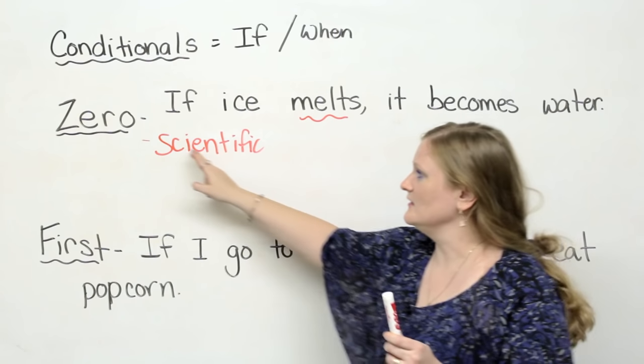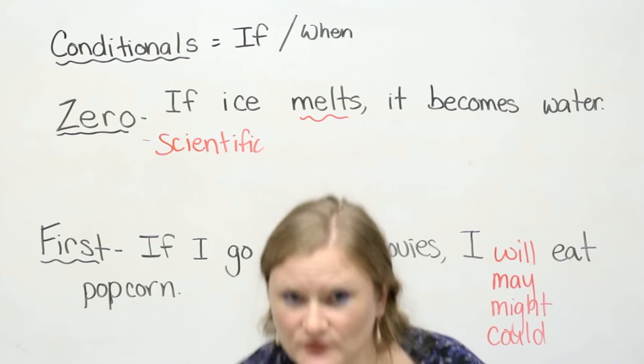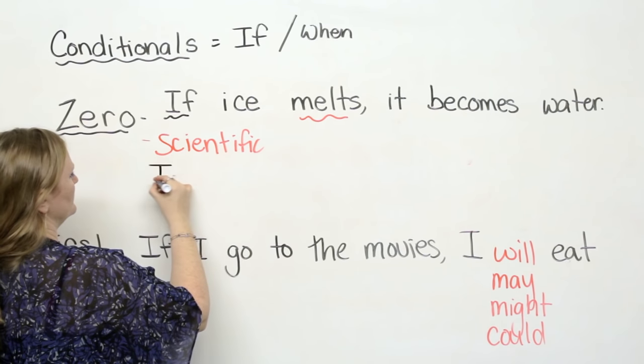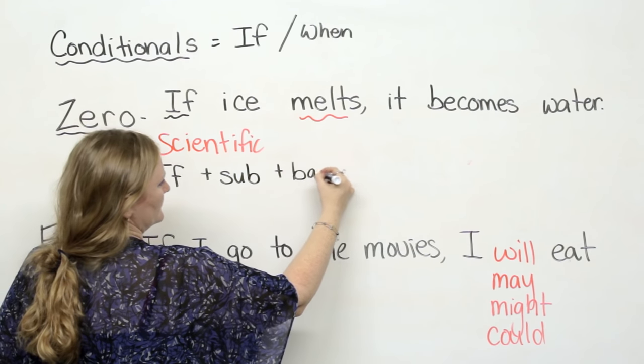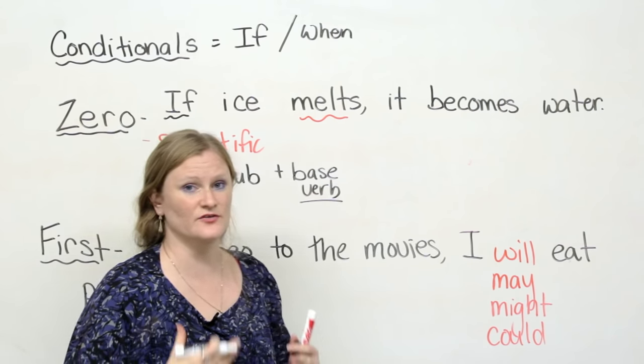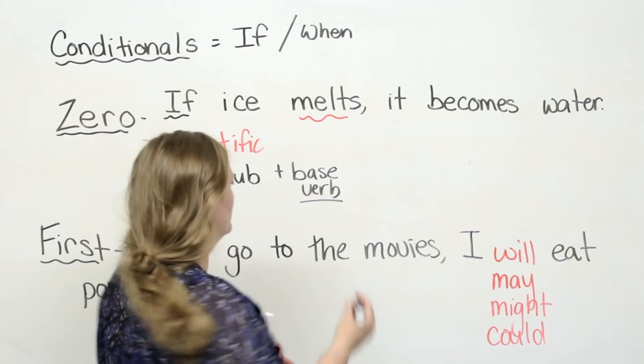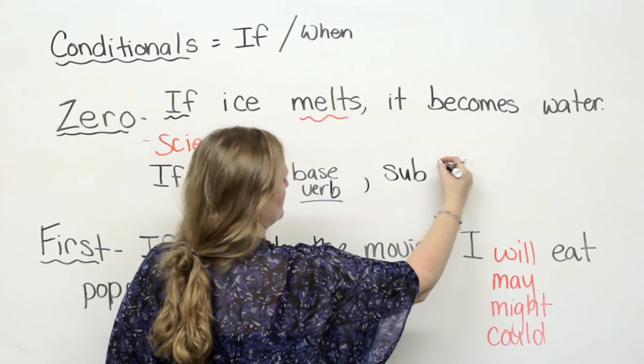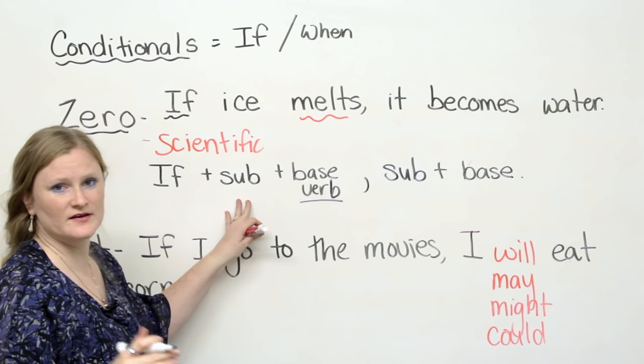So if something is 100% scientific you're going to use a zero conditional. How do you make conditionals? This is the fun part. As I told you, conditionals usually start with if or we can use when. So a zero conditional is if plus the subject plus the base verb. Now it's very important that you do not use any other verb. You can't use a gerund, you can't use past tense, you can't use would, you can't use could. You must use the base verb. So if subject plus base verb, subject plus base verb again. This is the basic zero conditional pattern or style of grammar.